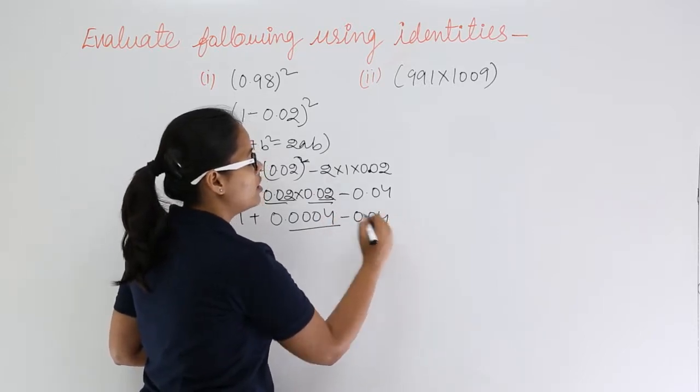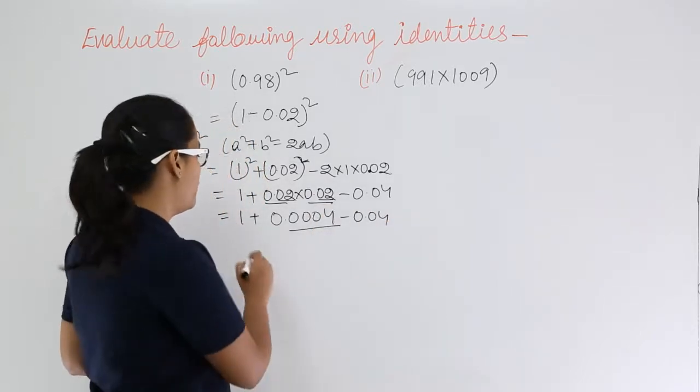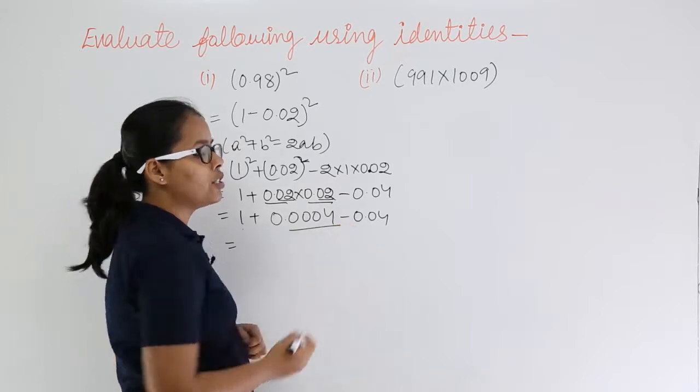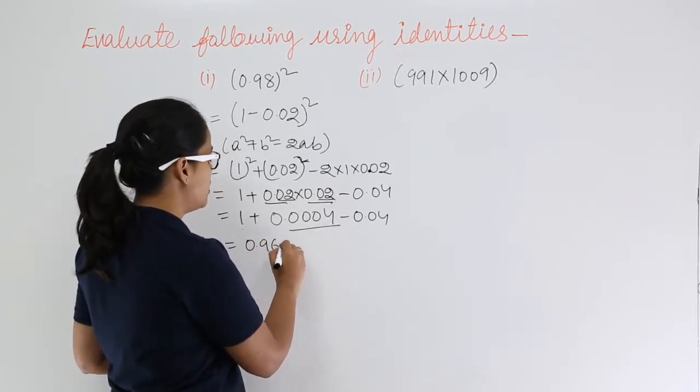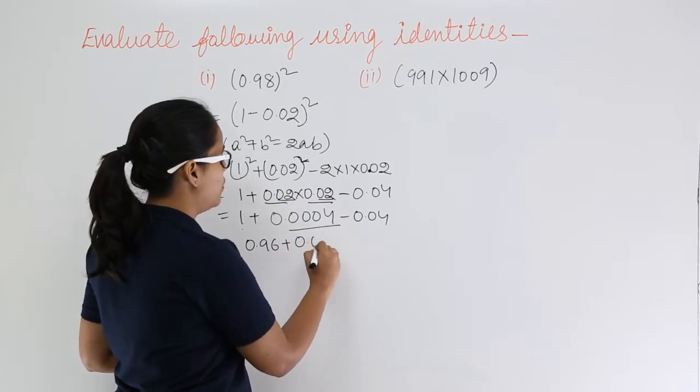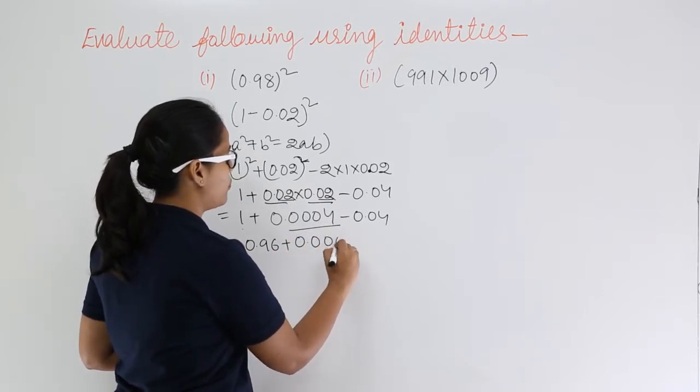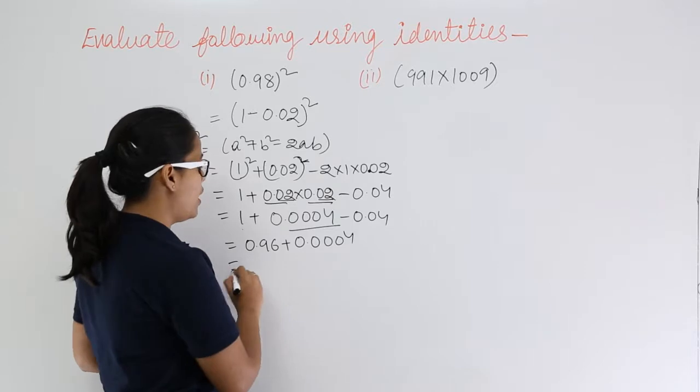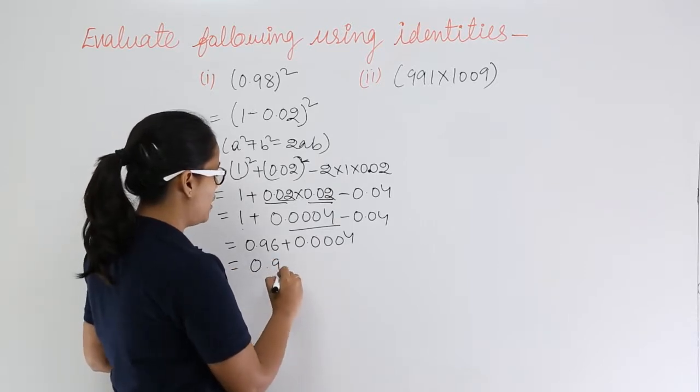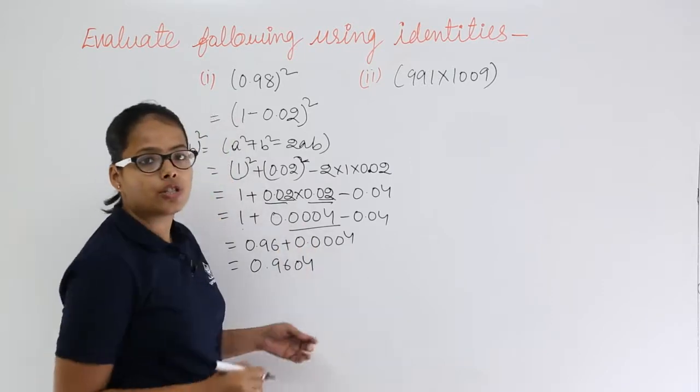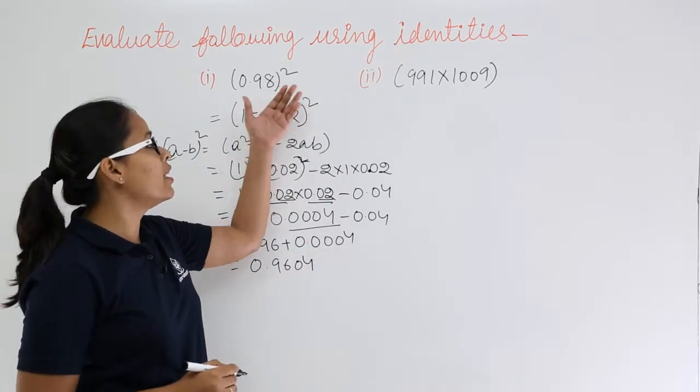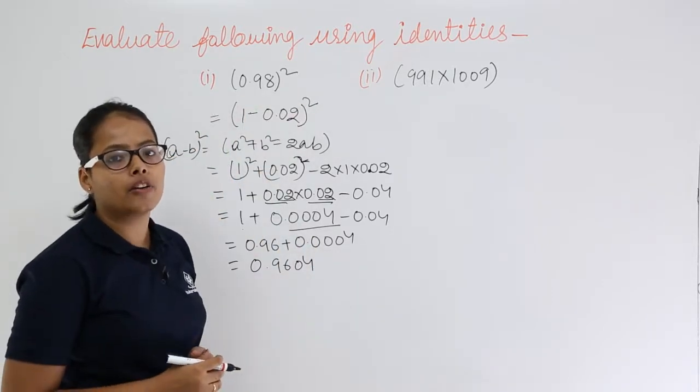Now subtract 0.04. When you subtract 0.04 from 1 you will be getting 0.96, plus add this value. When you add this you'll get 0.9604. So this is going to be your value after applying the identity on first problem.